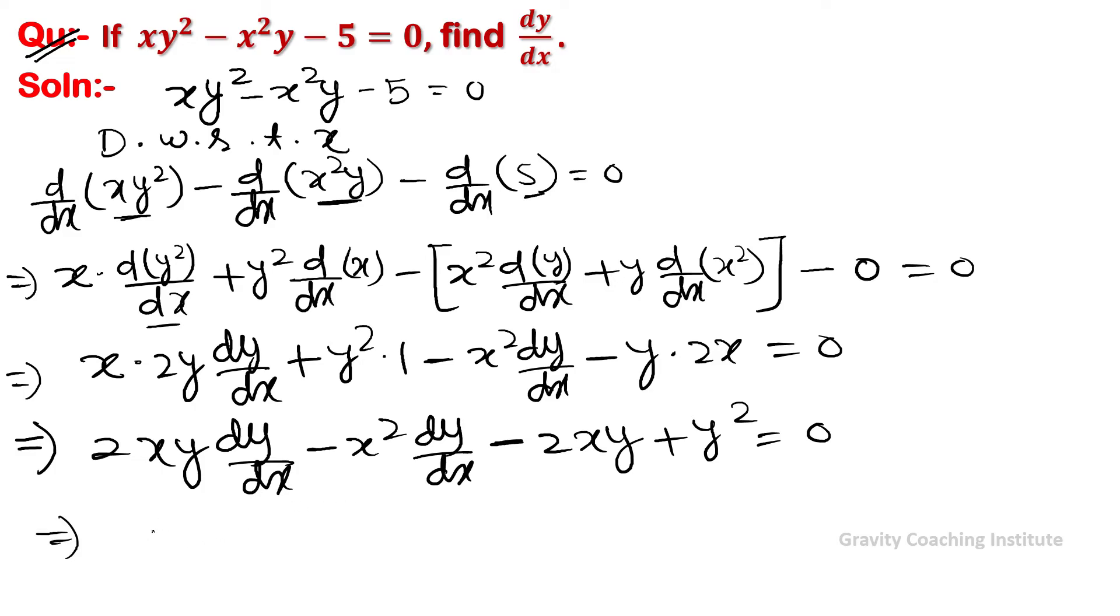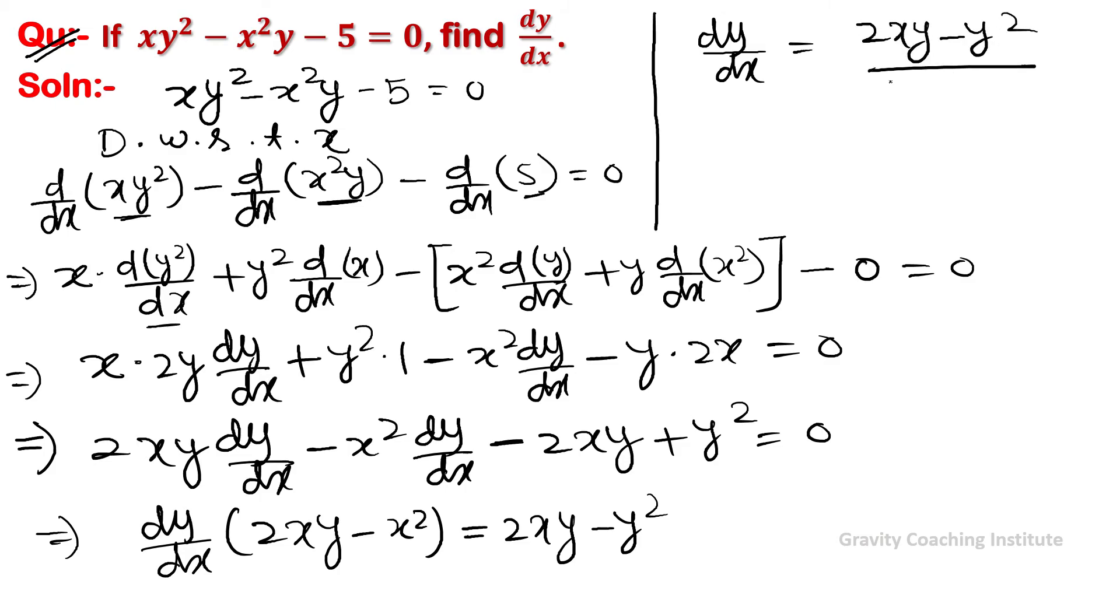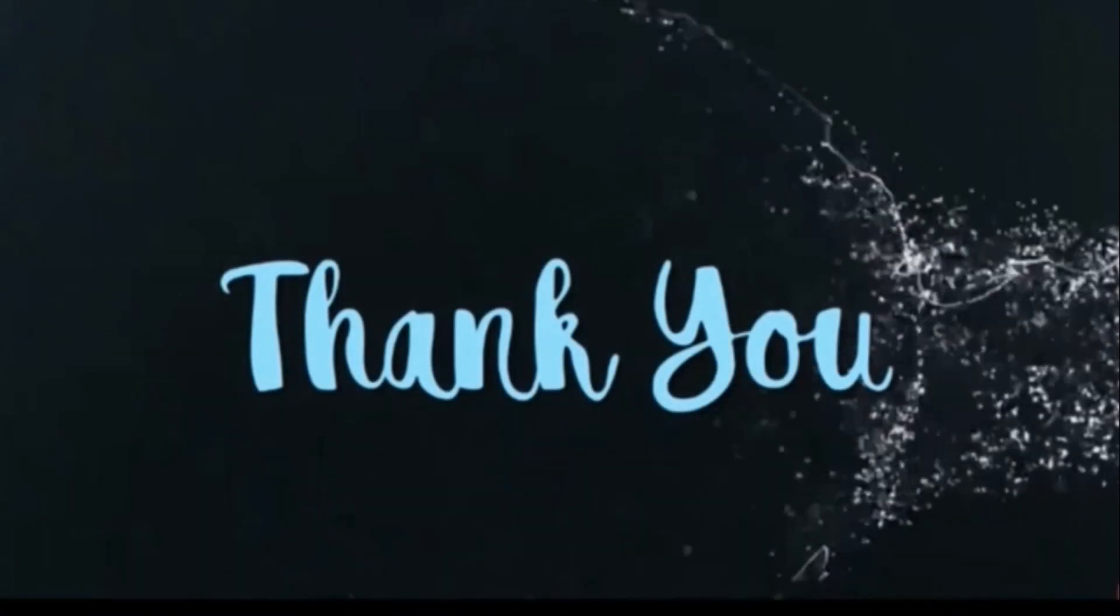Now we factor out dy/dx from the first two terms: dy/dx(2xy - x²) = 2xy - y². Therefore, dy/dx = (2xy - y²)/(2xy - x²), which can be written as y(2x - y) over the denominator. This is our required answer.